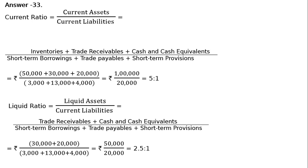That is rupees 30,000 plus rupees 20,000, divided by rupees 3,000 plus rupees 13,000 plus rupees 4,000, which equals rupees 50,000 upon rupees 20,000, that is equal to 2.5:1. This is your liquid ratio.